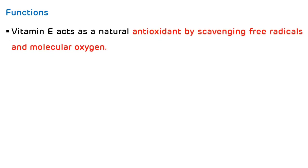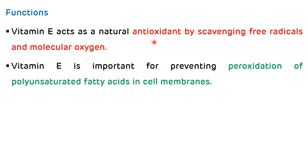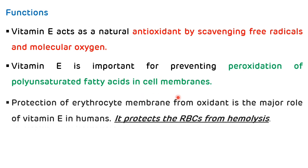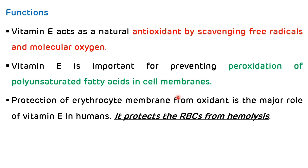Vitamin E acts as a natural antioxidant by scavenging free radicals and molecular oxygen, and it is considered one of the most powerful natural antioxidants. Vitamin E is important for preventing peroxidation of polyunsaturated fatty acids present in cell membranes. It also protects the erythrocyte membrane from oxidant effects and protects RBCs from hemolysis.